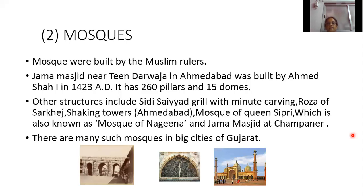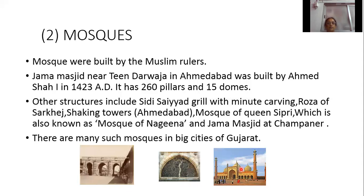Other notable structures include the Sidi Sayyid Grille, with very minute and intricate carvings. Also notable are Roja Sarkaj and the Shaking Towers of Ahmedabad — if you shake one tower, the other towers also automatically shake, and the reason for this remains a mystery. The Mosque of Yunispur, also known as the Mosque of Nagina, and the Jama Masjid at Champaner were also built during this period.